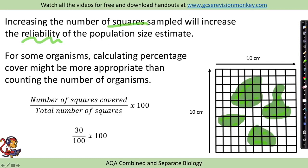Now, for some organisms, calculating percentage cover might be more appropriate than counting the number of organisms. For example, you may well have seen something like lichen growing on trees or walls. If you wanted to sample lichen, you might use a really small quadrat, so just perhaps a 10 by 10 centimetre grid.